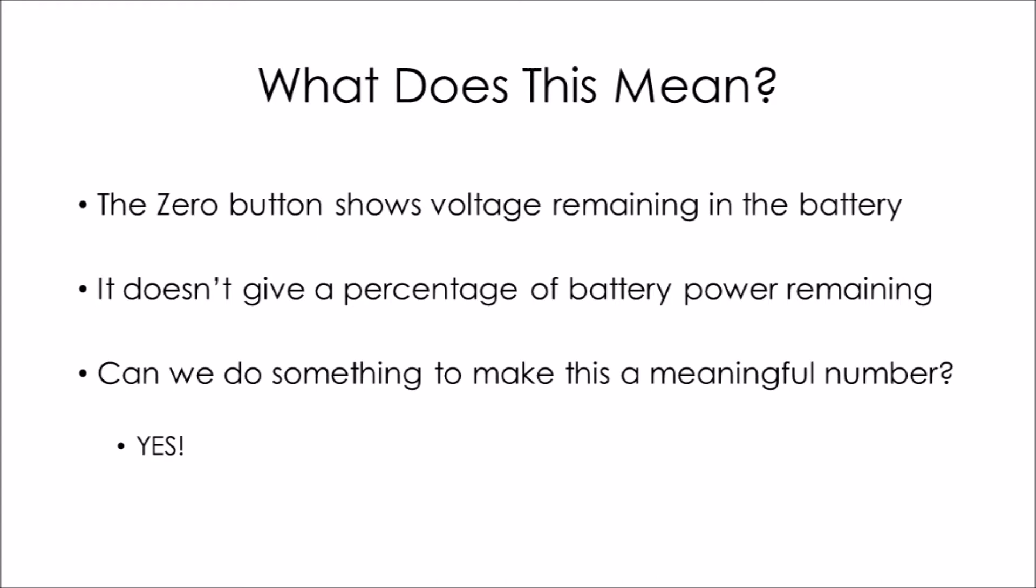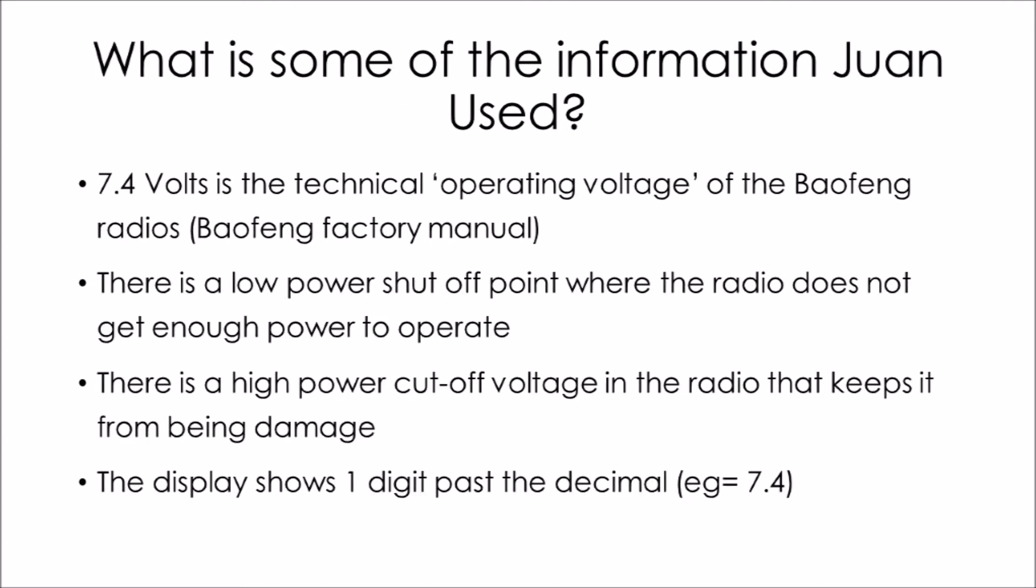Okay, what's some of the information that we used to develop the tables that are going to follow? Well, first off, the Baofeng manual says that 7.4 volts is the operating voltage of the Baofeng radio. We also know that there's a point where the power gets so low that the radio shuts off - there's not enough power to operate. There's also a circuit that cuts off voltage that is too high - it keeps the radio from being damaged. And when you push the zero button, the display shows one digit past the decimal point.